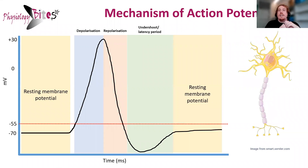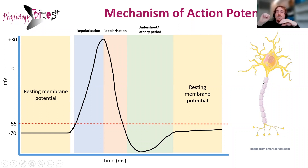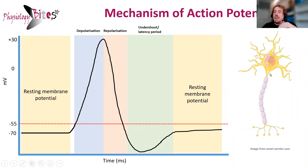The final point I want to make is: you might think, okay, so that's how an action potential works — sodium comes in, potassium comes out, and we get this transient increase and decrease in voltage. But how does it spread? If you imagine an action potential starting at the body of a neuron, once sodium starts to come in during the depolarization phase, that sodium will cause other voltage-gated sodium channels to also reach threshold. So by sodium coming in, it starts off a chain reaction — once an action potential starts here, it will trigger sodium channels next to it, which will then trigger the sodium channels next to those. That's why depolarization can rapidly spread down a neuron.